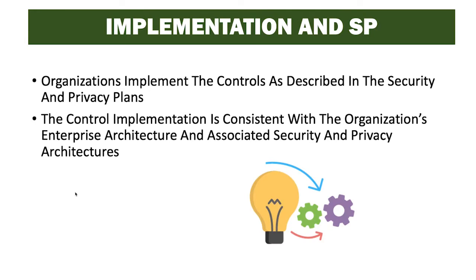Organizations implement the controls as described in the security and privacy plans. The control implementation is consistent with the organization's enterprise architecture and associated security and privacy architectures. When we designed the plan for implementing controls in the earlier step, we determined how we planned on doing the control implementation. Now we go ahead and implement the control as we planned it in those documents, making sure it fits in with the other things already in those architectures.